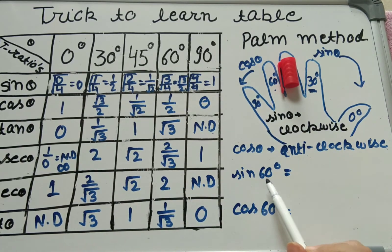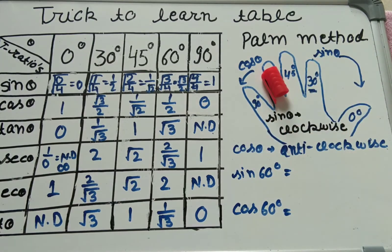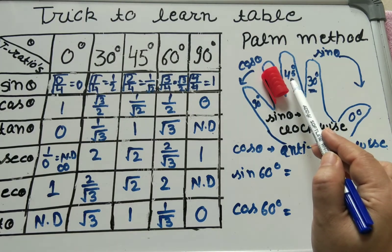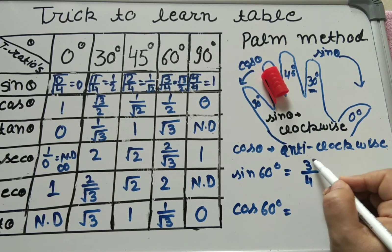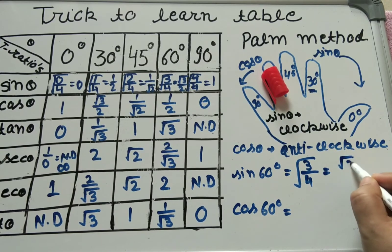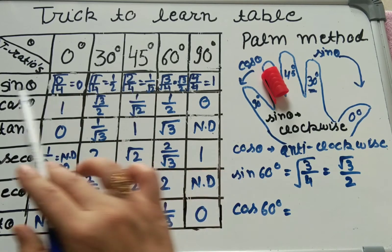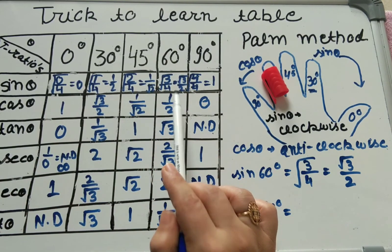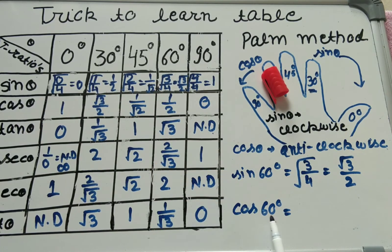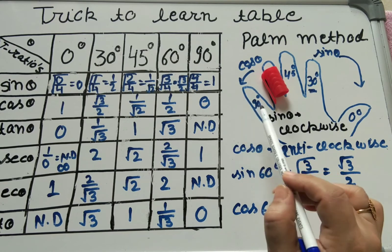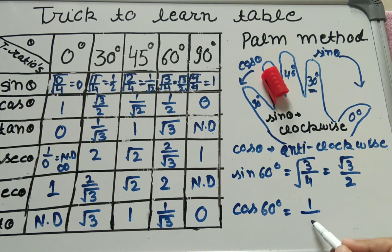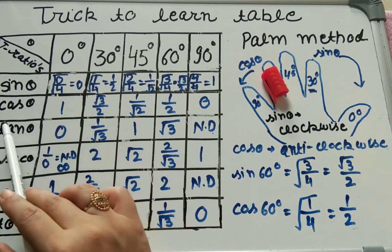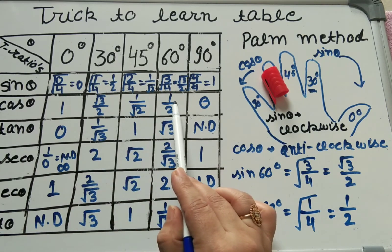For sin 60°: hide 60 degree and count clockwise — 1, 2, 3 fingers. Numerator 3, denominator 4, square root: √3/2. For cos 60°: anticlockwise, only 1 finger left. Numerator 1, denominator 4, square root: √(1/4) = 1/2. Matching the table: sin 60° = √3/2 and cos 60° = 1/2.